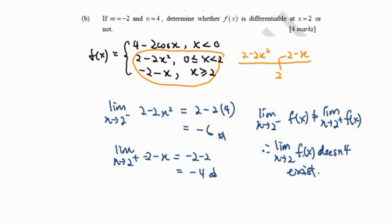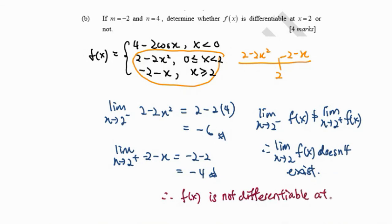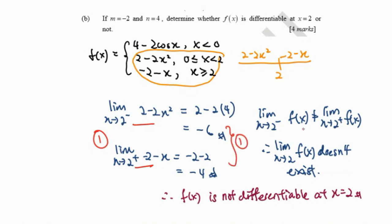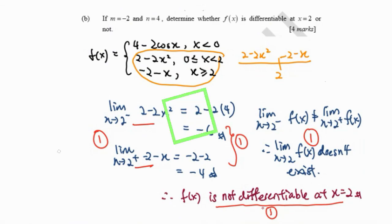Since the limit as x approaches 2 does not exist, this tells us the first principle does not work. Therefore, we conclude that the function is not differentiable at x equals 2. For scoring: finding the left-hand and right-hand limits gives one mark each; the conclusion that the function is not differentiable at x equals 2 because the one-sided limits are not equal gives the final mark.